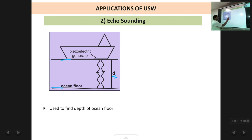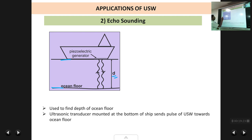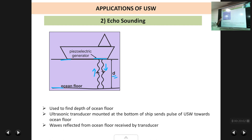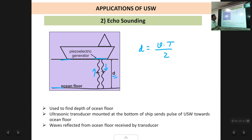An ultrasonic transducer — like a piezoelectric plate — is mounted at the bottom of the ship. It sends out ultrasonic waves toward the ocean floor. The waves hit the floor, get reflected back, and are received by the same transducer, which measures the time between sending and receiving the reflected pulse. Using the same formula D = V × T / 2, you can measure the depth of the ocean floor.